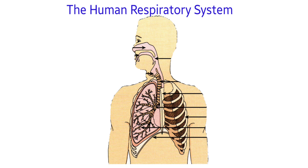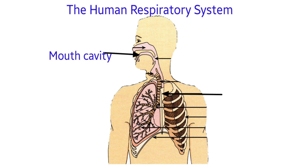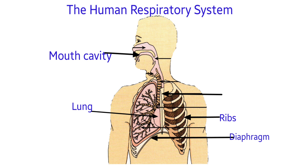The system involved in this gas exchange is the respiratory system. The system of passageways leads from the mouth and nostrils into the lungs. The lungs are situated in the thoracic cavity or thorax. The walls of the thorax are strengthened by the ribs, and its floor consists of a sheet of muscle called the diaphragm.